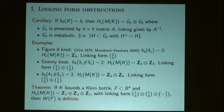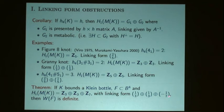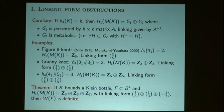One other result that follows from the linking form, and which will reappear: if the two-fold cover of a knot has homology Z3 plus Z3 plus Z7 with a particular linking form, you can't immediately show it lacks a presentation of this sort, but playing with the algebra you discover that any matrix presenting that form is going to be definite. Another way to say it: if it did bound a Klein bottle, the two-fold branch cover of the four-ball over the Klein bottle would be a definite manifold.